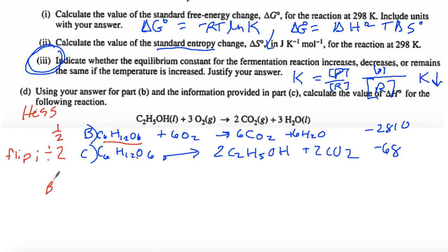So let's divide this one by 2. We're going to rewrite B. We have one half C6H12O6 plus divided by 2, 3 oxygen, arrow 3 CO2 plus 3 H2O. And we divided this by 2 as well and we get minus 1405 and it's still a negative.